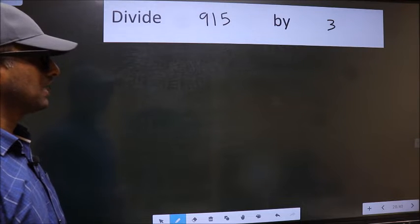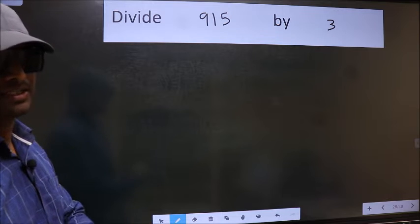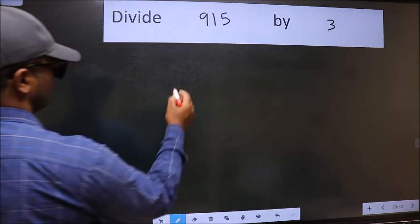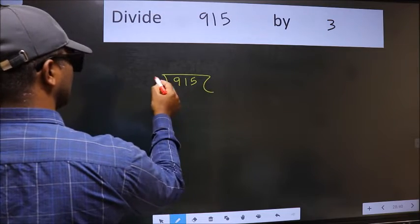Divide 915 by 3. To do this division, we should frame it in this way. 915 and 3 here.